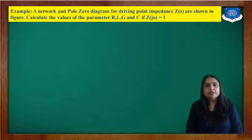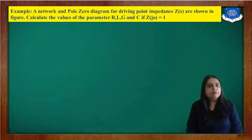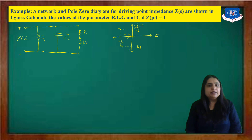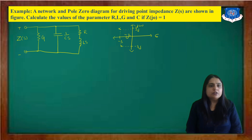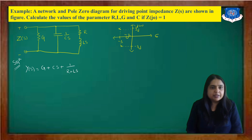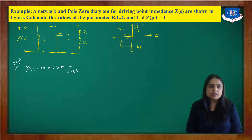Next, we have an example where a network and the pole-zero diagram of driving point impedance Z(s) are given, and we want to calculate the parameters R, L, G, and C, with the condition Z(j0)=1. Since the circuit has a parallel connection, instead of Z(s) we first find Y(s), since admittances add in parallel. So Y(s) = G + Cs + 1/(R+Ls).